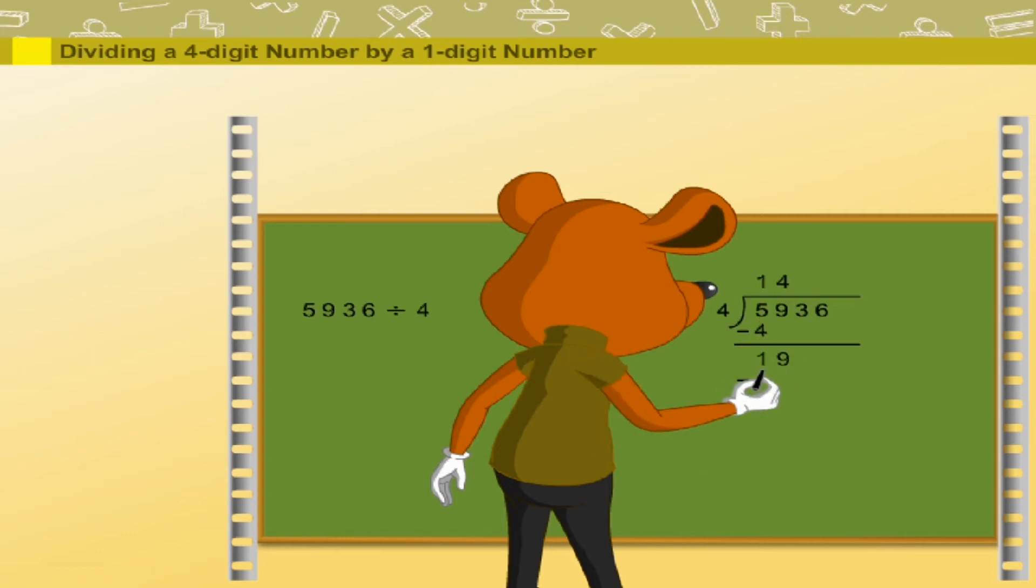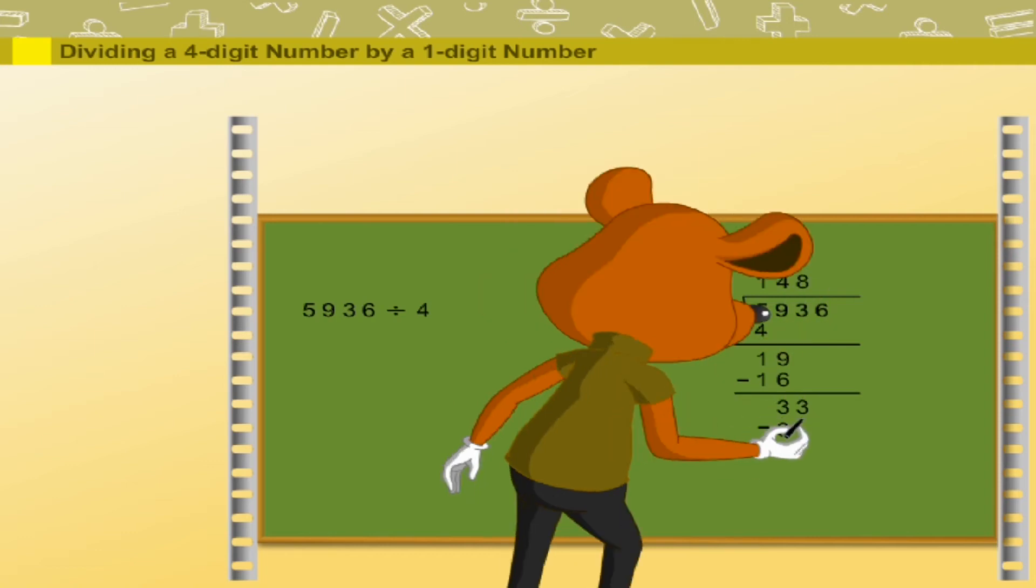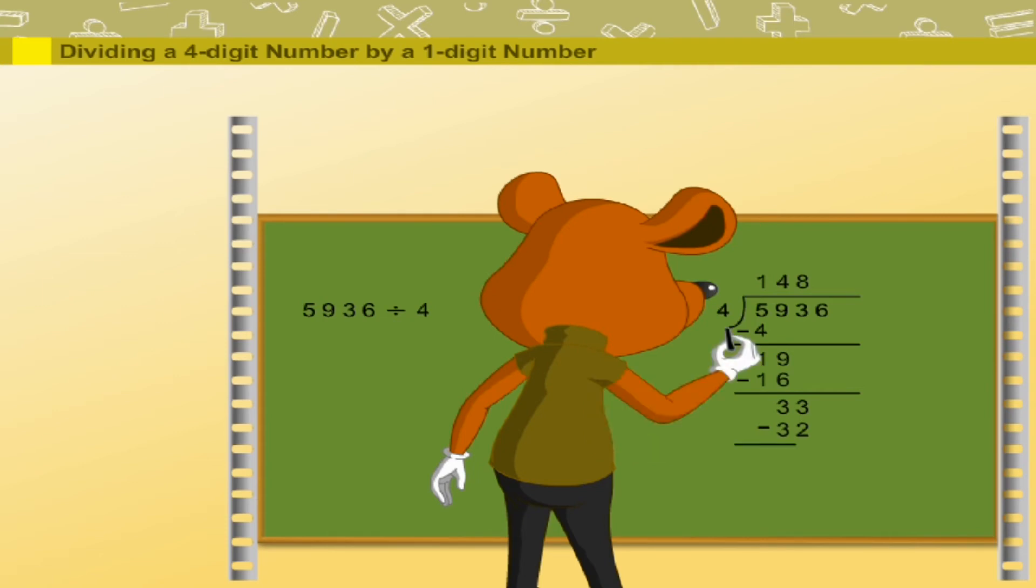4 divides 19 4 times. So, quotient 4, remainder 3. Copy the next digit 3. 4 divides 33 8 times. Quotient 8 and remainder 1. Copy the next digit 6.